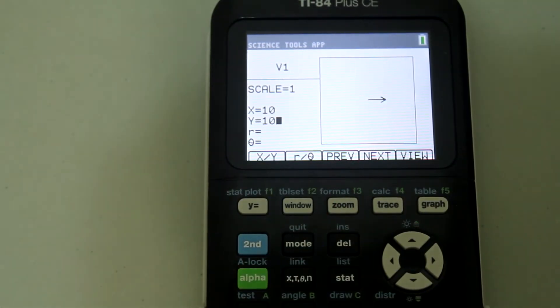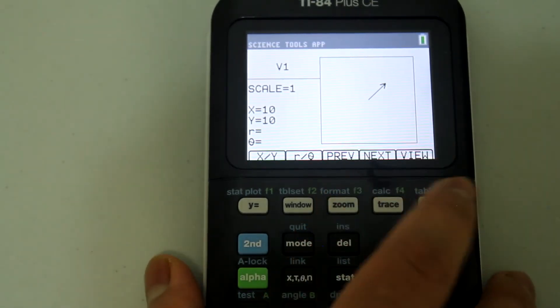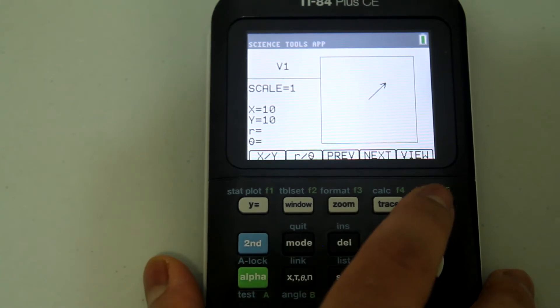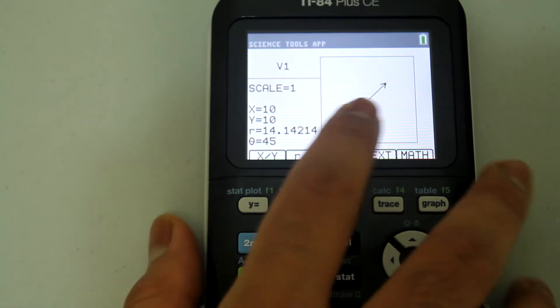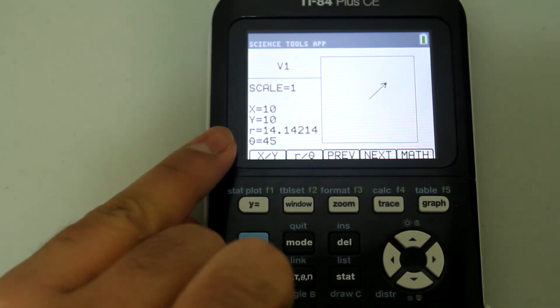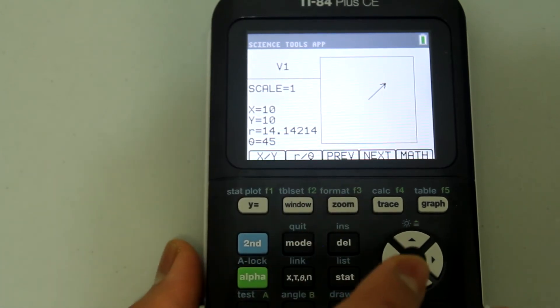Now under view we're going to hit the graph button and that allows us to see the vector drawn out and also the resultant and the theta. Once again the theta is with respect to the positive x axis.